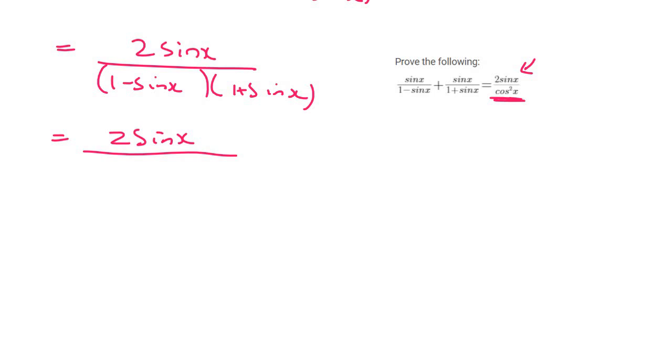So that would become 1 plus sin x minus sin x minus sin squared x. These sin x's cancel, and so we are left with 2 sin x over 1 minus sin squared x.